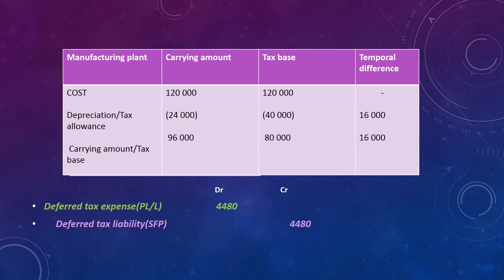In this example, we have a manufacturing plant at a cost of $120,000. In the current year, the difference between the carrying amount and the tax base is recognized as the temporary difference. The carrying amount is for accounting purposes, while the tax base is for accounting for these assets or liabilities in the financial statements for tax purposes. We have depreciation of $24,000 and a tax allowance of $40,000. At the end of the year, we have a carrying amount of $96,000 and a tax base of $80,000. Our temporary difference is $16,000.